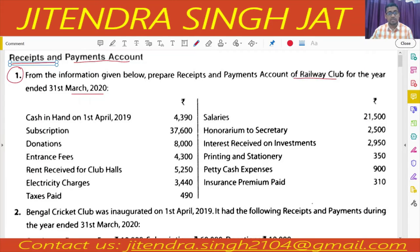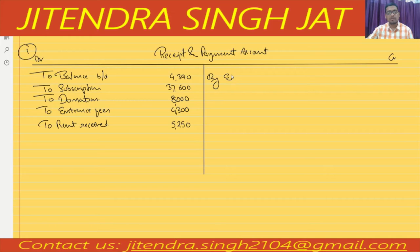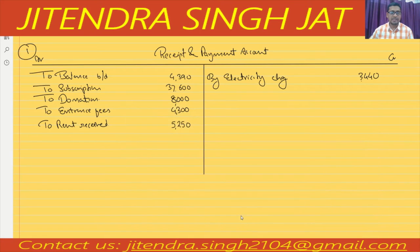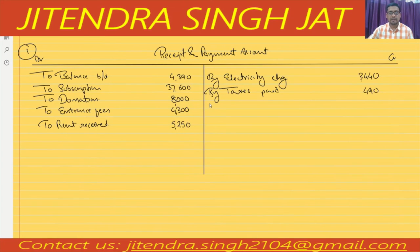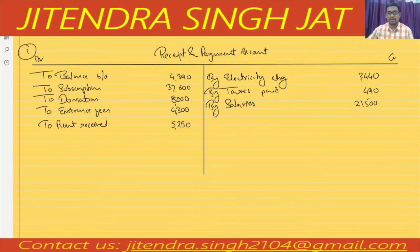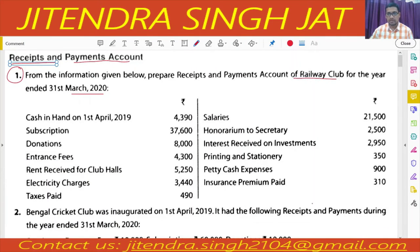Electricity charges — cash is going out. By electricity charges: three thousand four hundred and forty. Taxes paid — by taxes paid: four hundred and ninety. Salaries — by salaries: twenty-one thousand five hundred. Then honorarium to secretary — by honorarium to secretary: two thousand five hundred. Wait — three thousand five hundred.